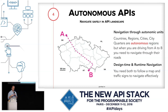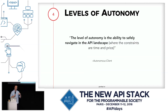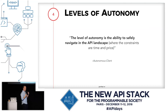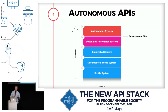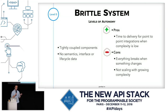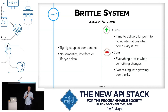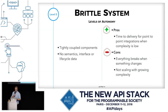This is what we need to achieve with APIs as well. When you think about autonomy, there are certain levels. Levels of autonomy are basically the ability to safely navigate these landscapes, where ideally the constraints are only time and price. At the bottom we have the Braille system — nobody should be doing this — where you create an API with no metadata, no documentation, everything is tightly coupled. Nobody knows what's happening. It's really fast to get to market, that's the benefit, but that's all it is.